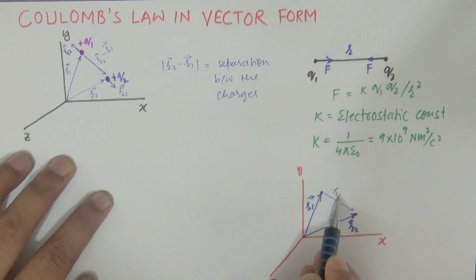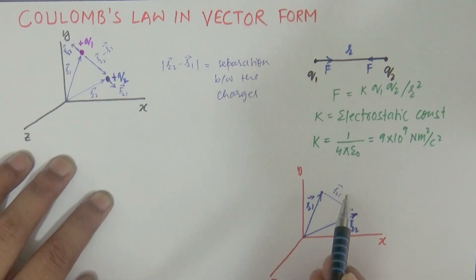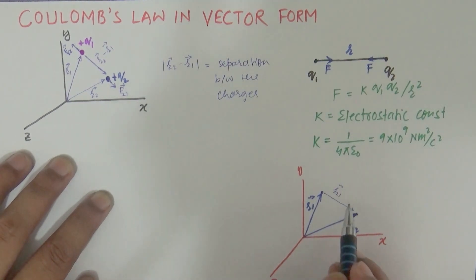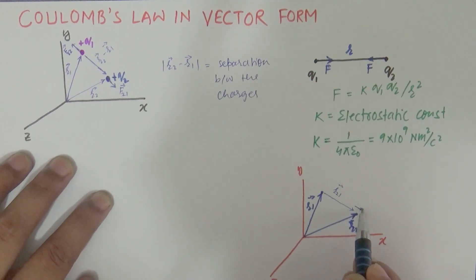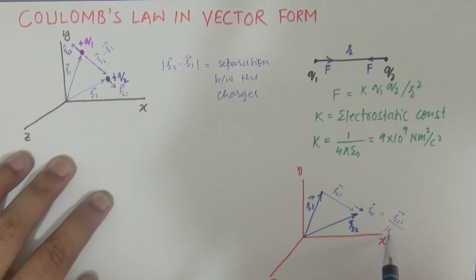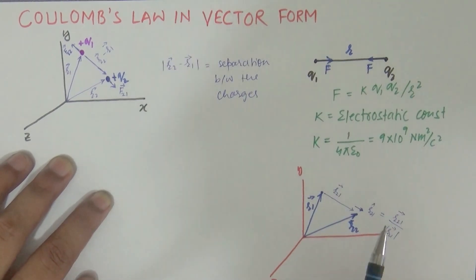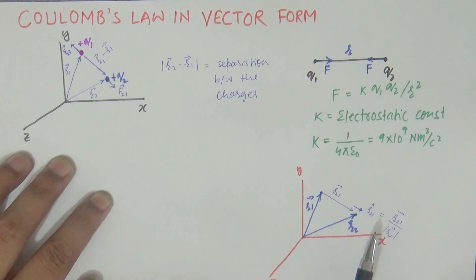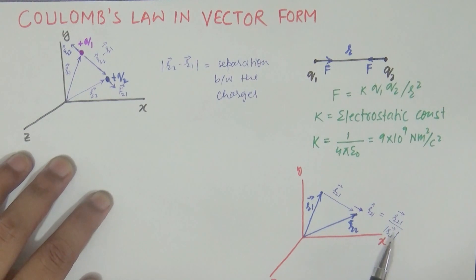The vector from q1 to q2 is r21, which equals r2 minus r1. If we take a unit vector in this direction, we write r21 cap, which is simply r21 divided by the magnitude of r21. By definition, a unit vector equals the vector divided by its magnitude.